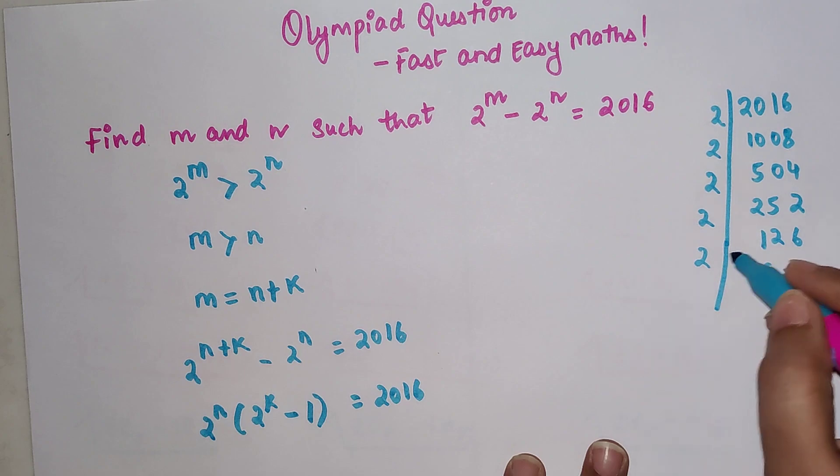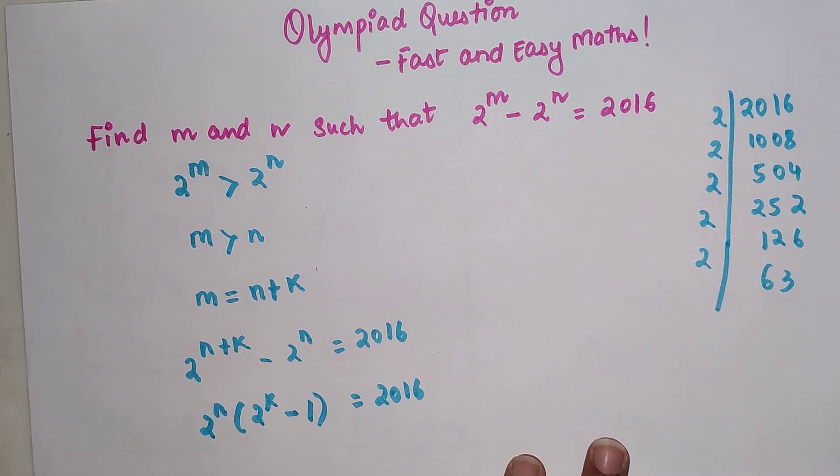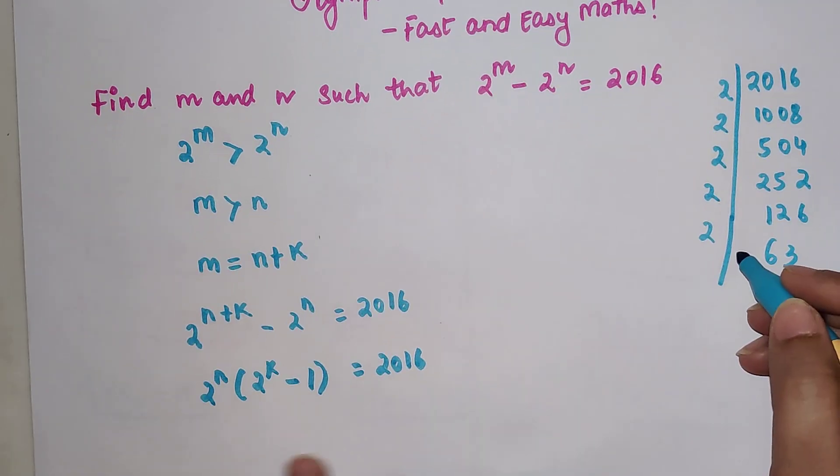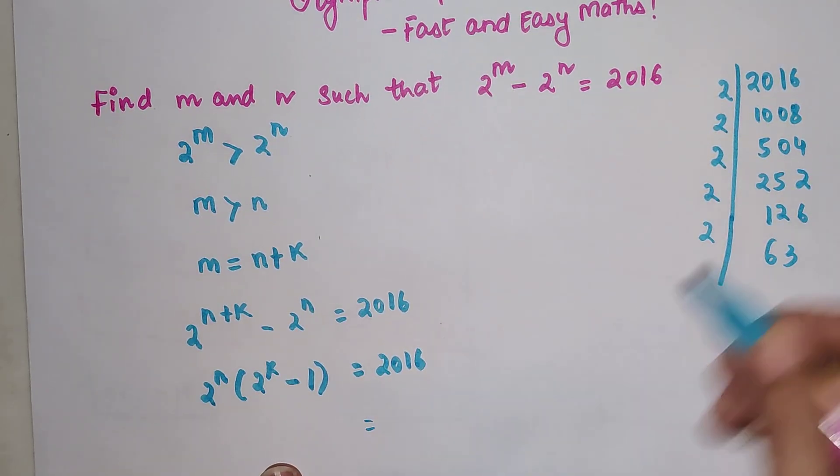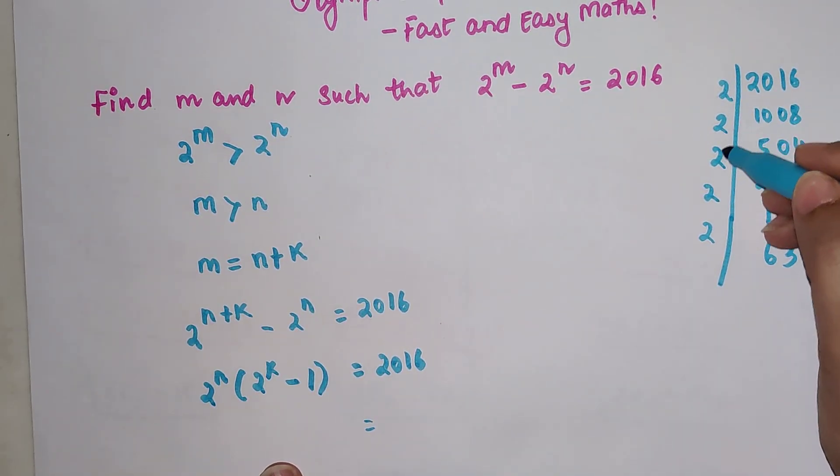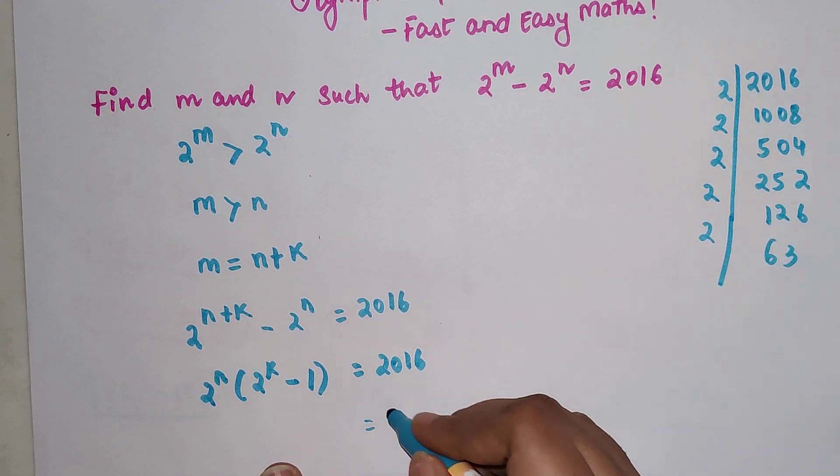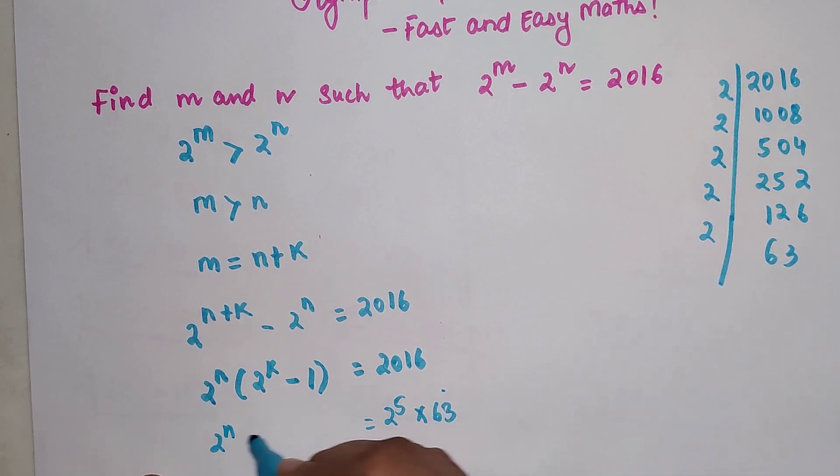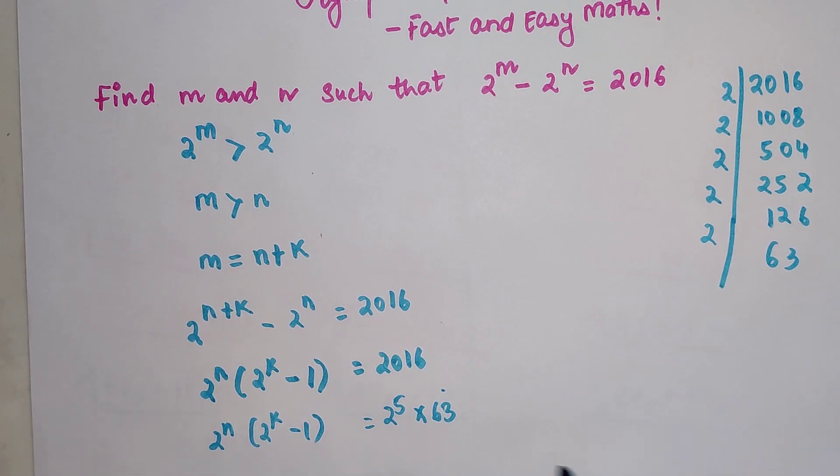So this is now coming out to be basically I can write this as nothing but 2 raise to 5 into 63, right? And this is again 2 raise to n into 2 raise to k minus 1. Now understand.